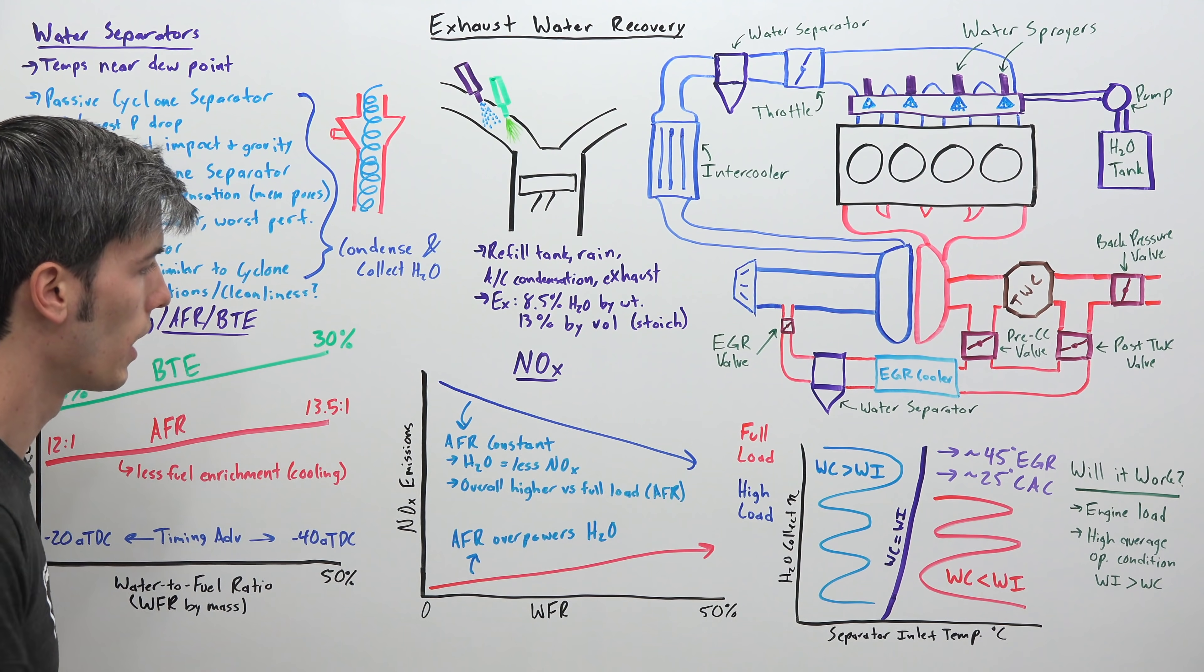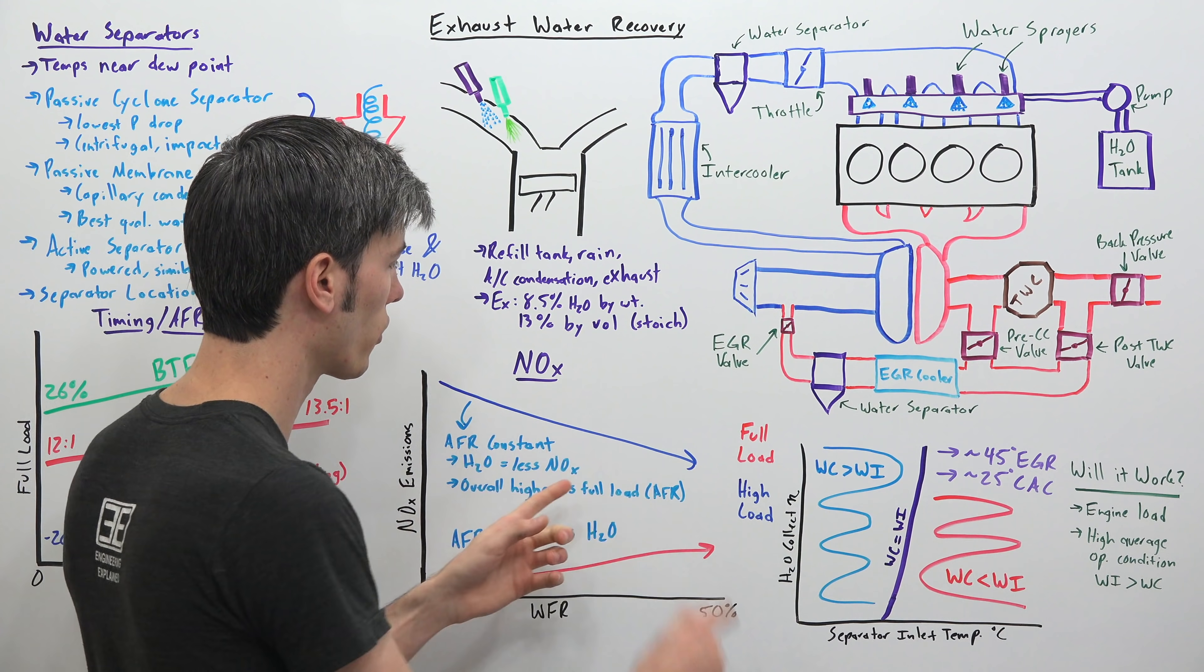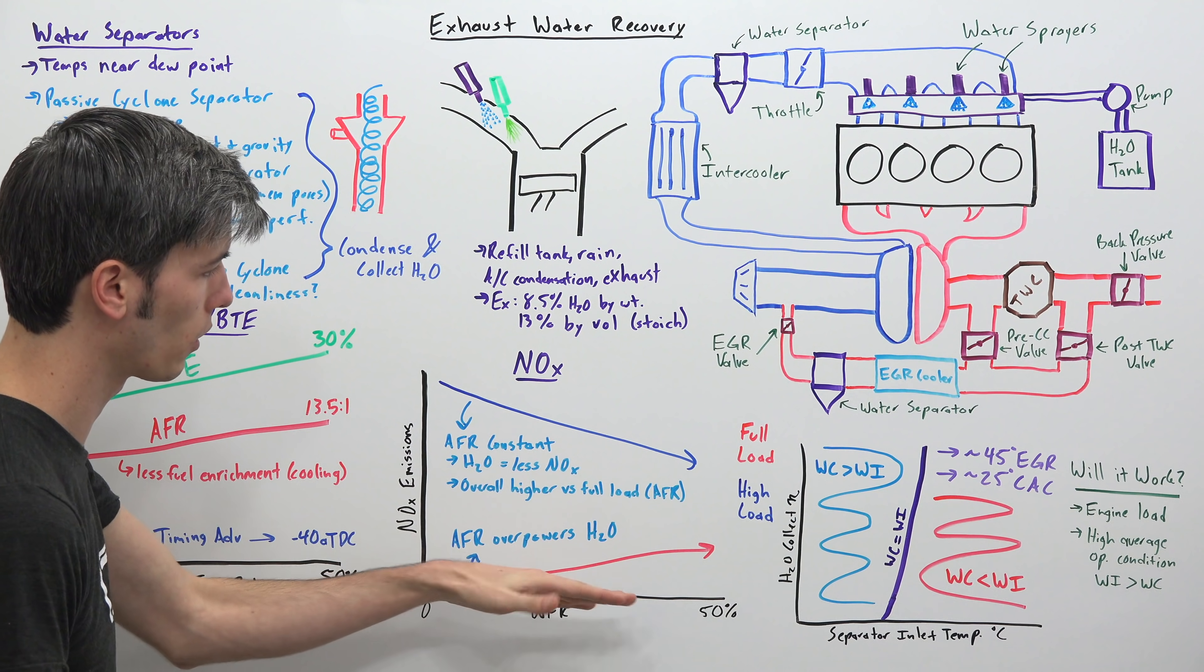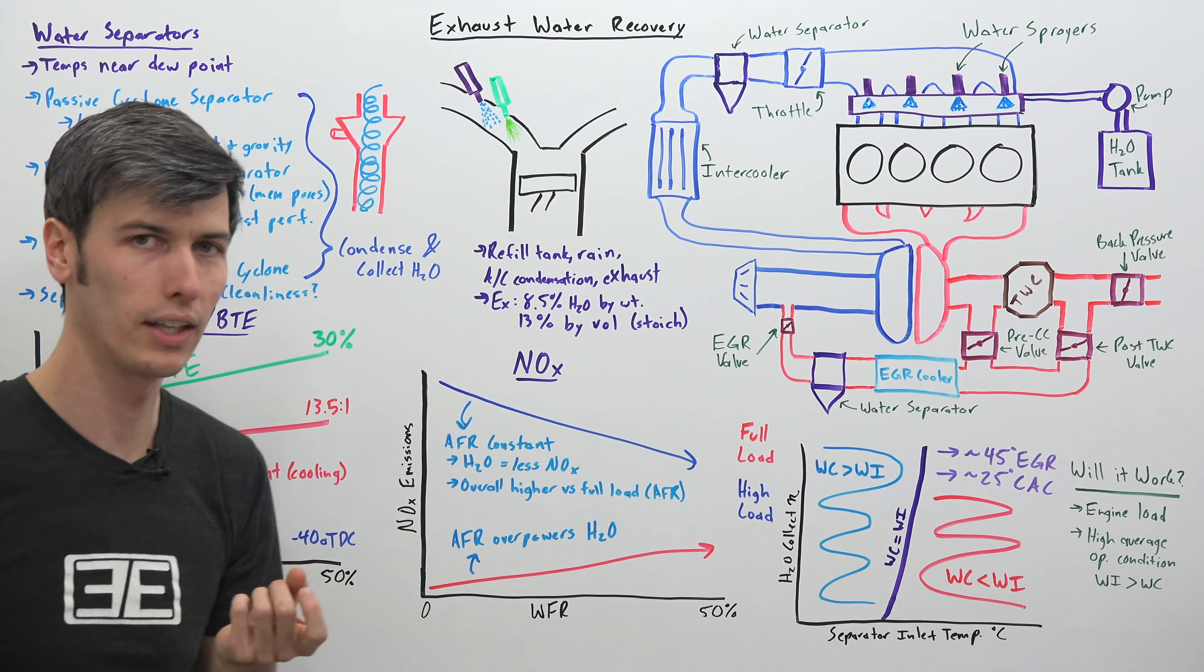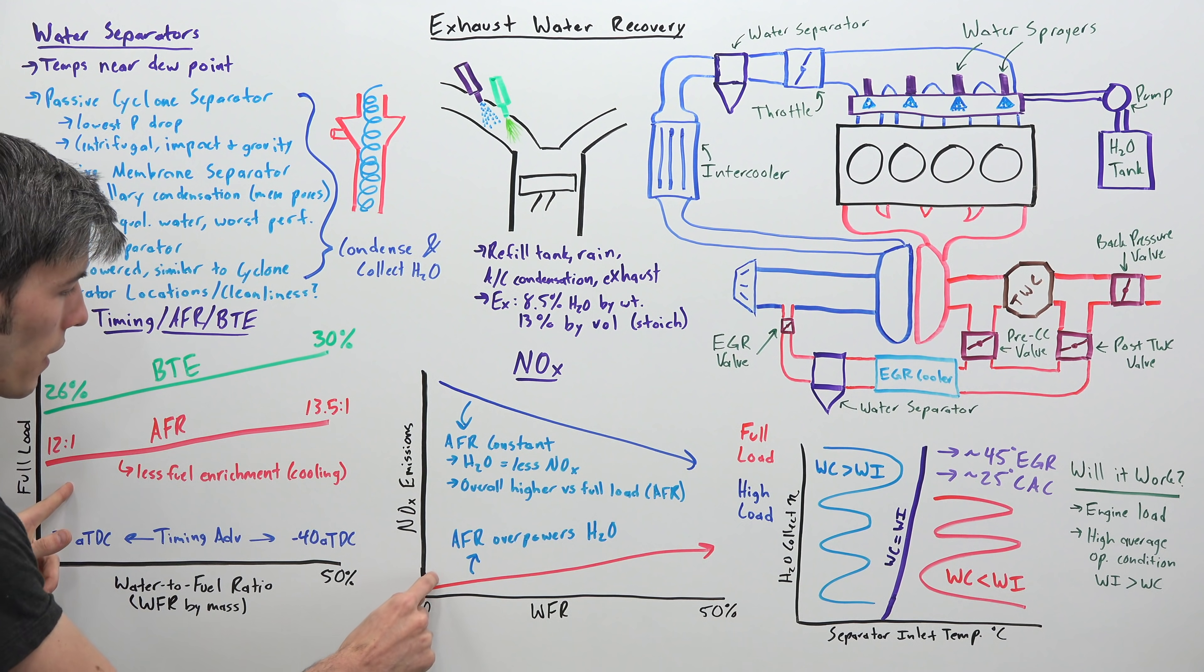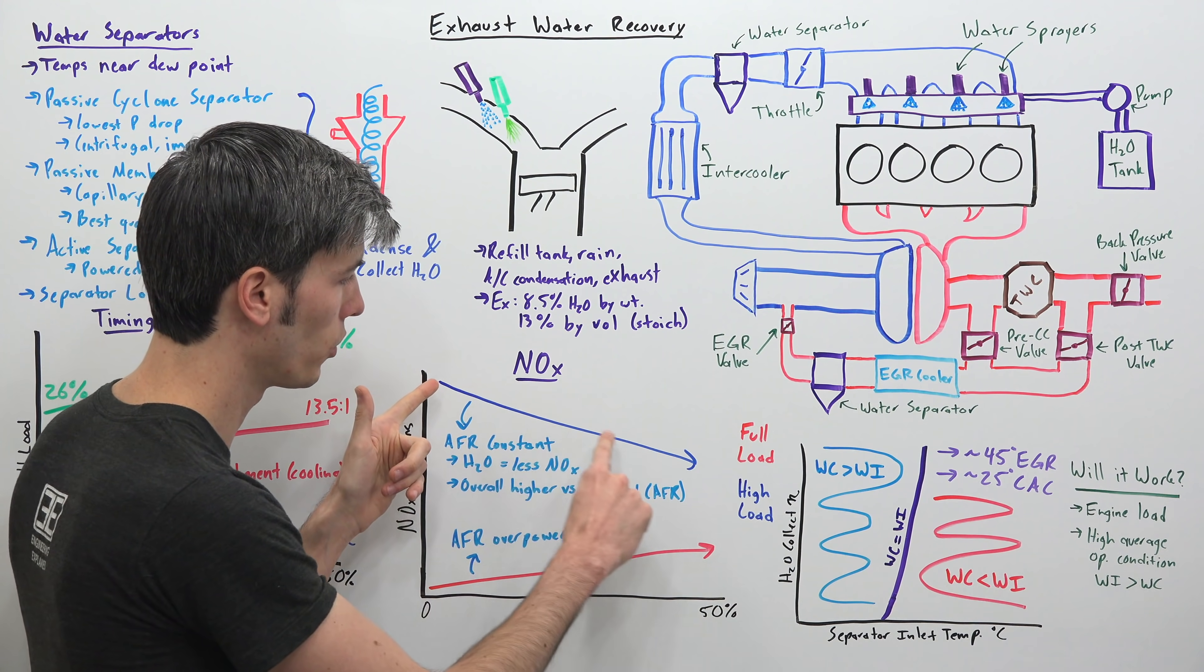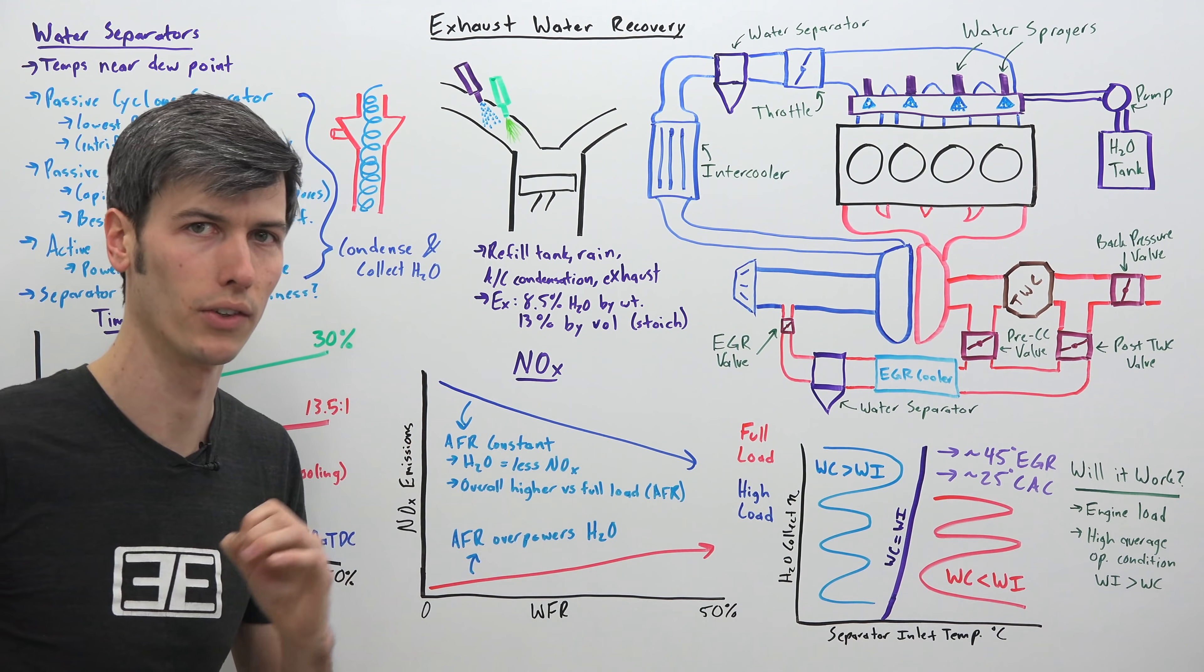And so as a result you do see that water itself does actually decrease the nitrogen oxide emissions. Now it's still higher at this high load than at full load because the full load is operating at such a cooler condition. But it's very interesting to see that that fuel enrichment process, the richer the air fuel ratio, that will overpower the effect of injecting water as far as it's concerned with nitrogen oxide. At this high load you're not doing that so you see a decrease, the more you inject water the less nitrogen oxide emissions you have.